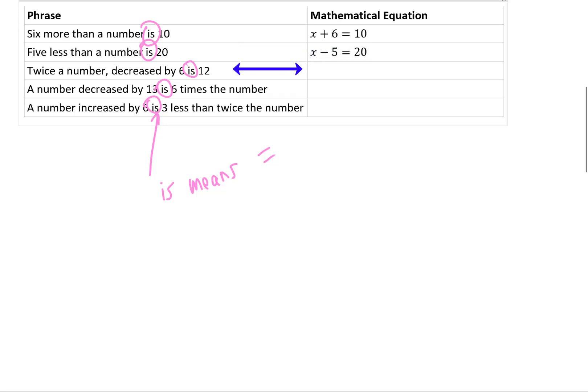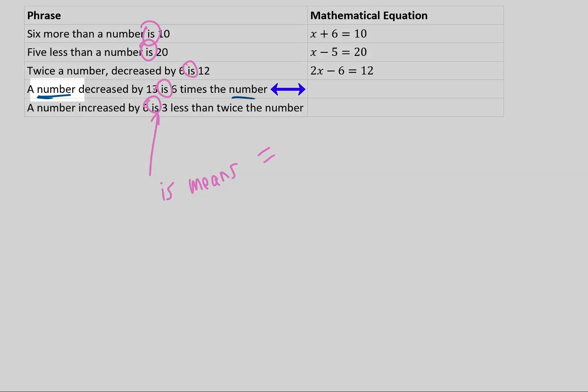We have twice a number decreased by 6 is 12. Well, twice a number is the same thing as double a number. We can call that 2x. We're going to decrease that by 6, and we're going to say that is 12, so that equals 12. Next, a number decreased by 13 is 6 times the number. So now we're seeing the word number on either side of the equal sign.